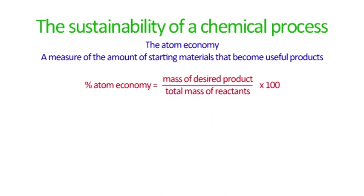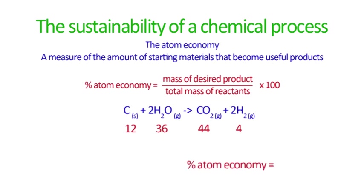Let's have a look at an example. Here we're reacting steam with carbon to produce hydrogen. We first need to work out the molecular masses of the products and reactants using a periodic table. Then we put the numbers into our equation.